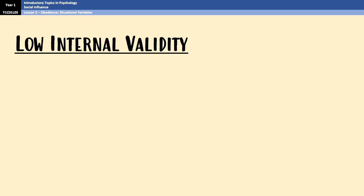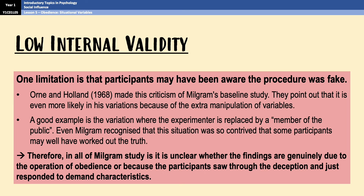Another limitation — also an issue in Milgram's baseline study — is that participants may have been aware that the procedure was fake. Orne and Holland, who also criticized Milgram's original study, point out that it's even more likely that participants may have worked out the procedure was fake in the variations, because of the extra manipulation of the variables. A nice example is the variation where the experimenter is replaced by a member of the public, because it's so contrived — how likely is it that a member of the public with no connection to the university is just going to walk in and take over the study? Therefore, in all of Milgram's studies, it's unclear whether the findings are genuinely due to obedience or because participants cottoned on to the deception and responded to demand characteristics — giving the studies low internal validity.